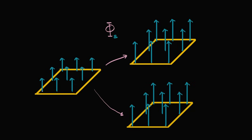We know from Faraday's Law that when you have a change in flux, that's going to induce a current in the loop. An interesting question is: what direction is that current actually going to go in? We have two options — the current could go in the clockwise direction, or it could go in the counterclockwise direction. Which do you think it will be?